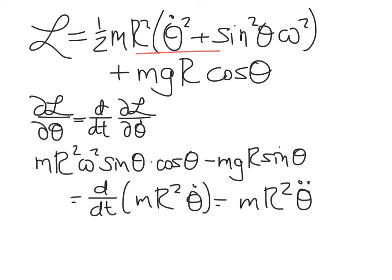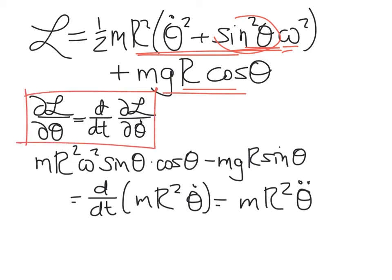Here's our Lagrangian: we have our kinetic energy, which has a term that depends on theta — that's going to be really important. Omega we're assuming is a constant, so it doesn't represent a variable coordinate we need to account for in this problem; it doesn't do any dynamics on its own. Then we have our potential energy. Applying the Euler-Lagrange equation relates generalized forces to generalized momenta — here the generalized force turns out to be a torque and the generalized momentum is an angular momentum.